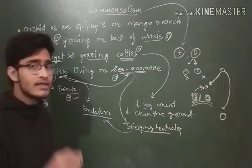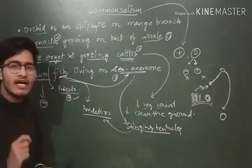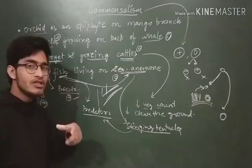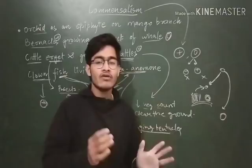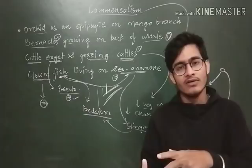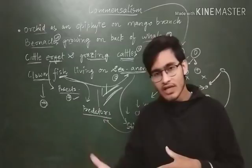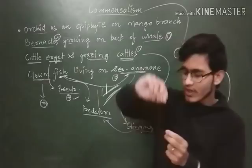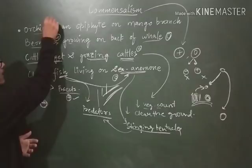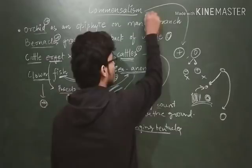The last and most important example — already asked in examinations — is orchid living as an epiphyte on a mango plant. 'Epi' means upper part, 'phytic' means plant, so an epiphyte grows on the upper part or branch of another plant. The orchid grows on the branch of the mango tree, deriving some nutrition and support from it. All those things are negligible for the mango, so the orchid gets benefit but the mango is not affected at all.